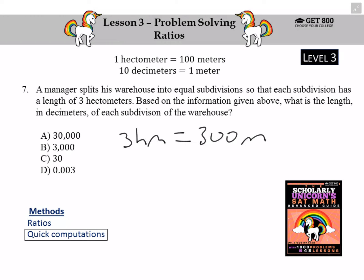Then, I'm going to use the fact that 10 decimeters is 1 meter to write that 300 meters is equal to 300 times 10, or 3,000 decimeters.